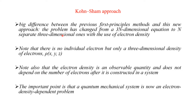That is, the three N-dimensional equation is separated into N three-dimensional equations. Note that there is no individual electron treatment, but only a three-dimensional density of electrons, that is ρ(x, y, z). Note also that the electron density is an observable quantity and does not depend on the number of electrons once it is constructed in a system. The important point is that the quantum mechanical system is now an electron density dependent problem.